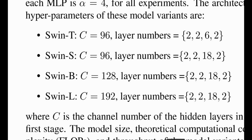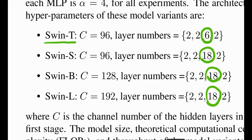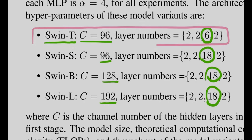The paper also suggests other architectures like Swin-S, Swin-B, and Swin-L. The main differences are the number of layers in stage three — Swin-T has 6 while Swin-S/B/L have 18 — and the number of channels: Swin-T and Swin-S use 96, Swin-B uses 128, and Swin-L uses 192. This video focuses on Swin-T.